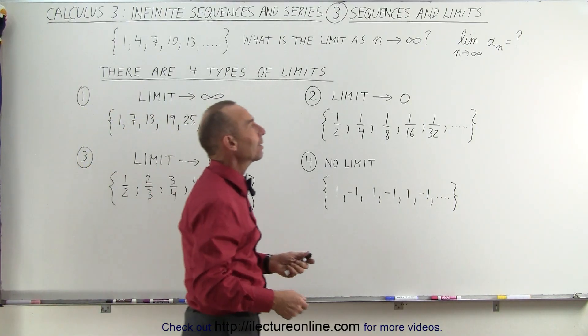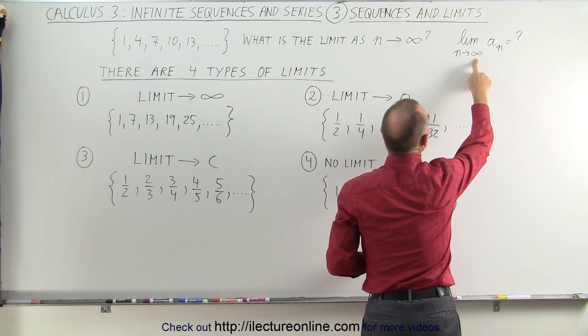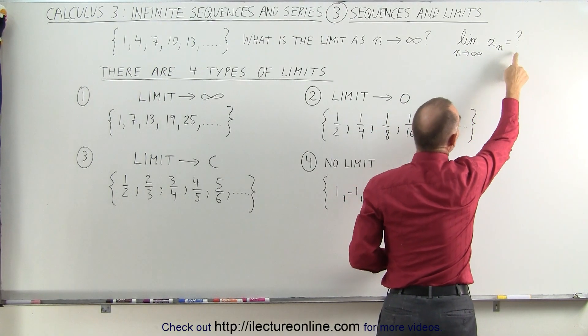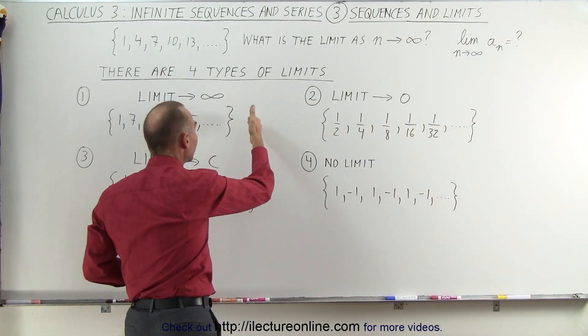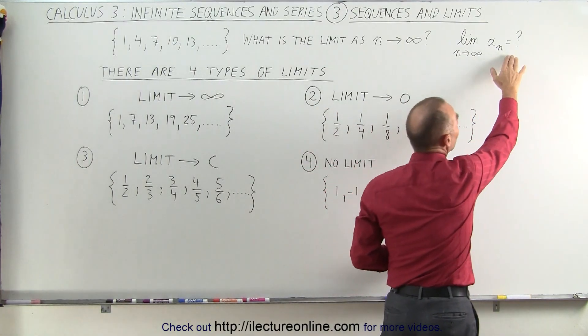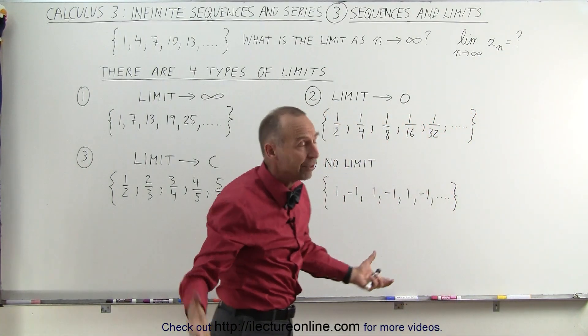The way we write that mathematically is as follows: the limit as n goes to infinity of that particular element in the sequence, a sub n, is equal to—and you can see that if it keeps on increasing, then of course that will go on to infinity. And the very last one in the sequence, as n goes to infinity, will of course be infinity.